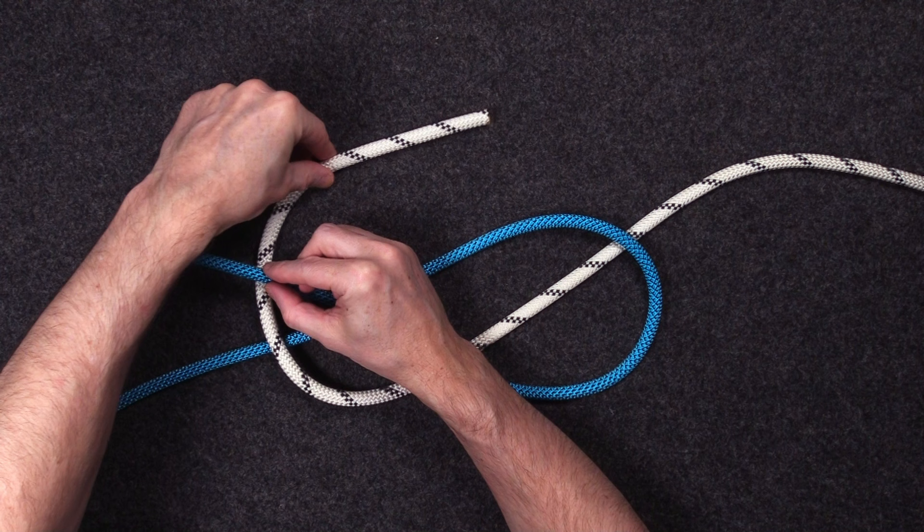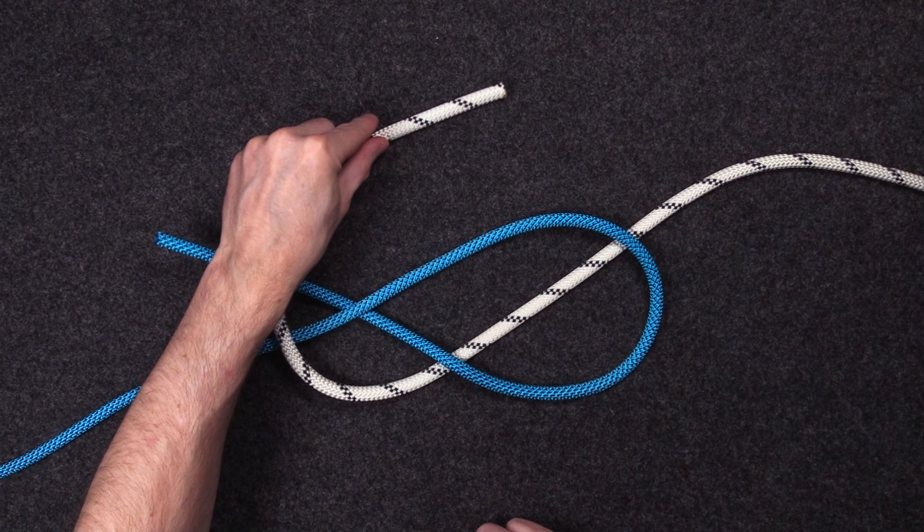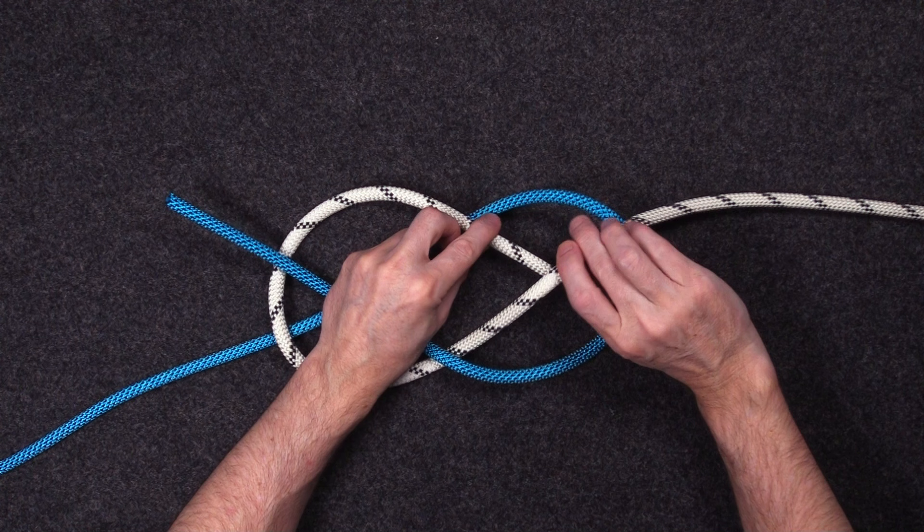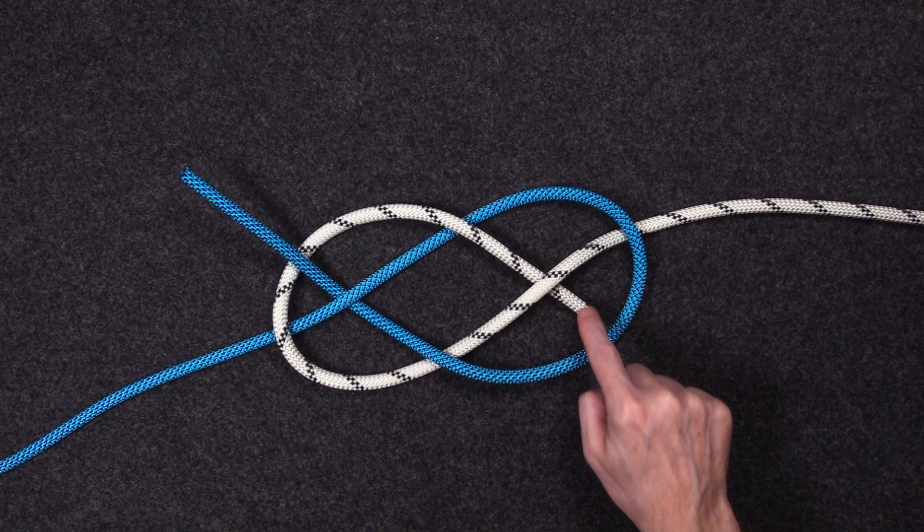We have this so far. We're then going to take the working end of the white rope and pass it over the blue rope. We can start to see that Carrick Bend shape now. Then we're going to go under the white rope with the working end of the white rope. And to finish that working end of the white rope, we'll go back over the blue rope.